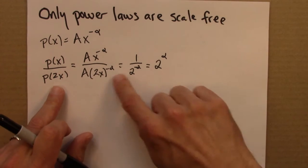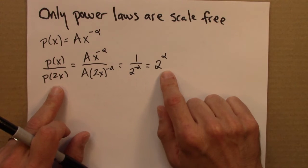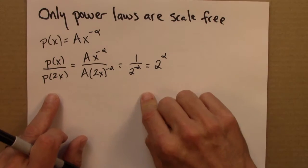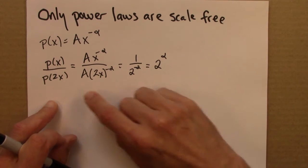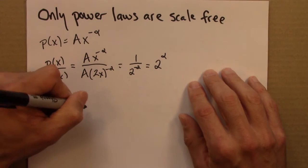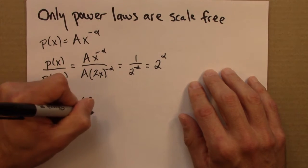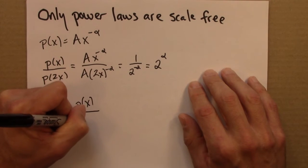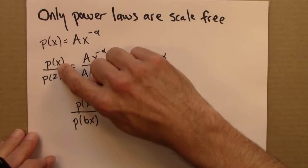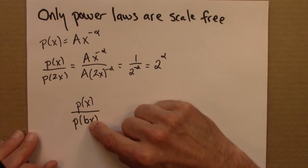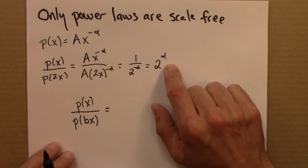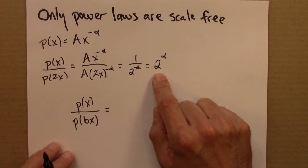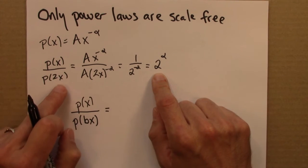So I'm going to use this idea to write more generally what it means for a function to scale. So two things, I'm going to assume instead of a scaling factor of 2, it could be some other factor, I'm going to call that B. So call this P(x) over P(Bx). So I want to take this idea and generalize it. This could be 3 or 4 or 2.2 or 6.8. And then the key thing is that whatever appears here, if it's scale free, does not depend on x.